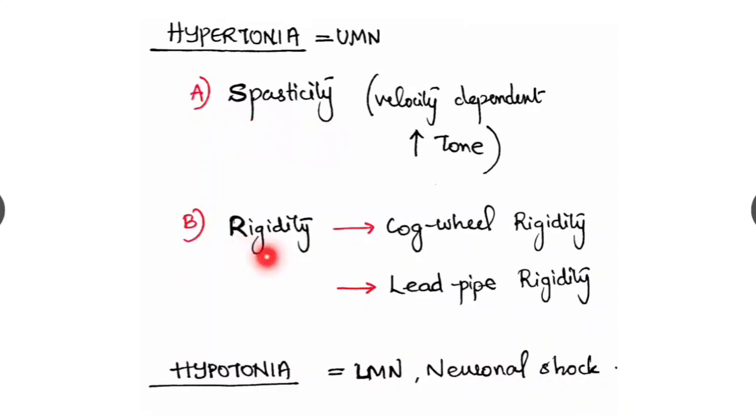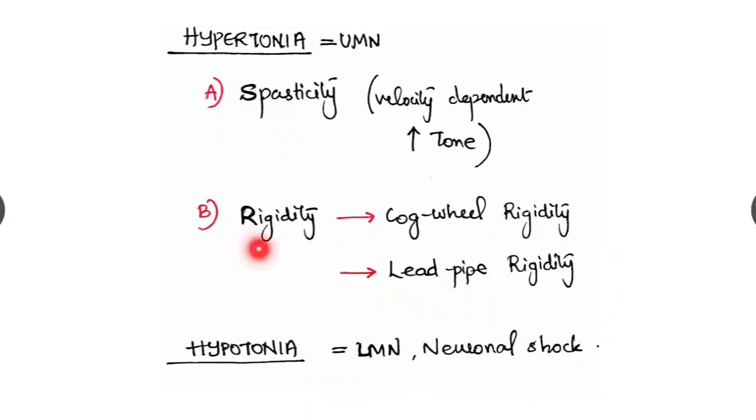Hypertonia can be spasticity or rigidity. Spasticity, it is a velocity-dependent increase in tone. Whereas rigidity can be two types, cogwheel and lead pipe. And this rigidity is a feature of Parkinsonism.